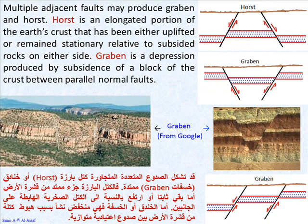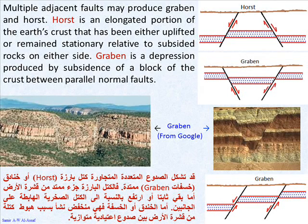Multiple adjacent faults may produce graben and horst. A horst is an elongated portion of the earth's crust that has been either uplifted or remained stationary relative to subsided rocks on either side. A graben is a depression produced by subsidence of a block of the crust between parallel normal faults.